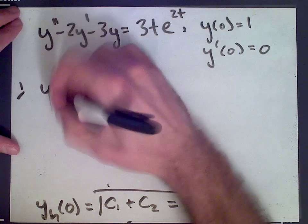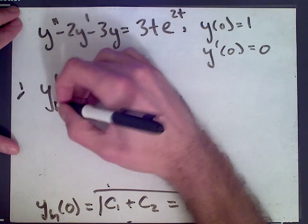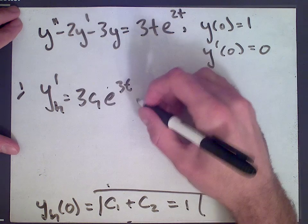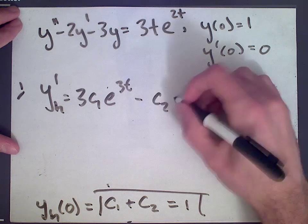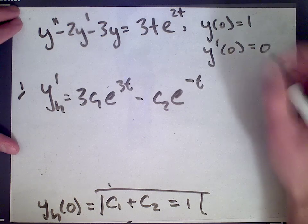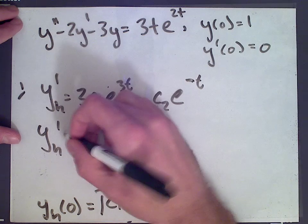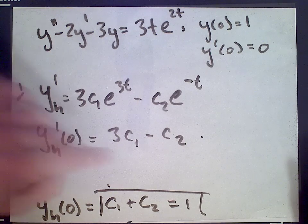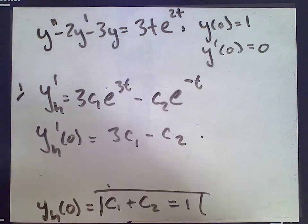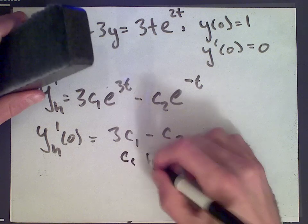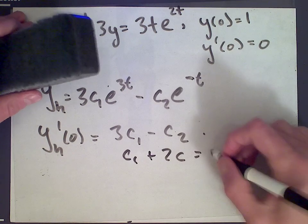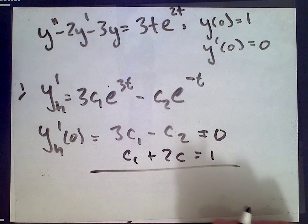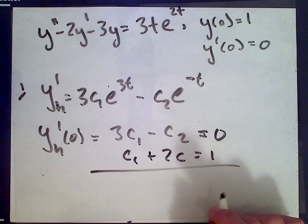yh prime equals 3c1 e to the 3t minus c2 e to the negative t. Plugging in 0, yh prime at 0 is 3c1 minus c2. So we get two equations: c1 plus c2 equals 1, and 3c1 minus c2 equals 0. This is just a system of two linear equations.